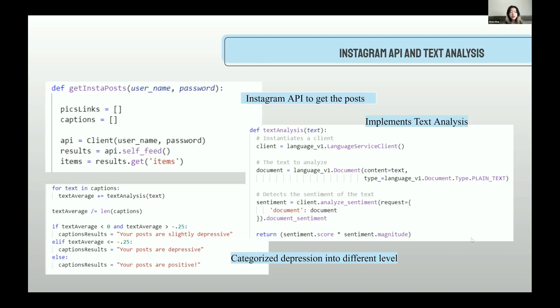Let's look at the code. These are all written in Python. The first segment of code is how we get a user's posts. Basically, the Instagram private API client class enables the user to pass in a username and password, and the program then has the ability to access the user's Instagram. The program uses the self feed function to get the authenticated user-owned feed. Since the program only needs captions and pictures, it collects information inside item among the user's own feed. The pictures are presented as links stored in the pick links list, and the captions are stored in the caption list.